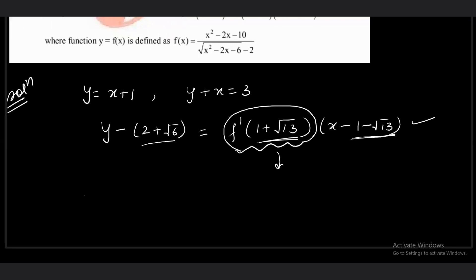Okay, what is the function f(x) by the way? You can see that f(x) is (x^2 - 2x - 10) divided by root of (x^2 - 2x - 6) and then minus 2. Obviously, this curve, the first feel is that let us rationalize it.